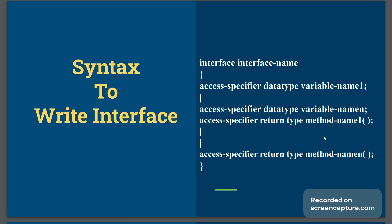To write an interface, 'interface' is the keyword, followed by the interface name. Inside, we can have an access specifier, data type, and variable name — you can have any number of variables. For methods, give the access specifier, return type, and method name — you can declare up to n methods inside the interface. The method is declared only; its body should not be written. Interface is similar to a class and is also a user-defined data type — a collection of variables and only method declarations.